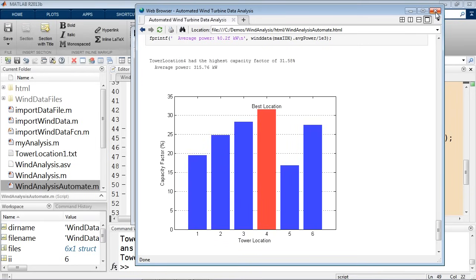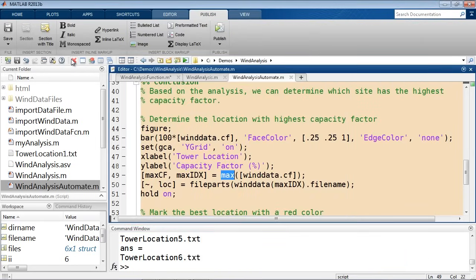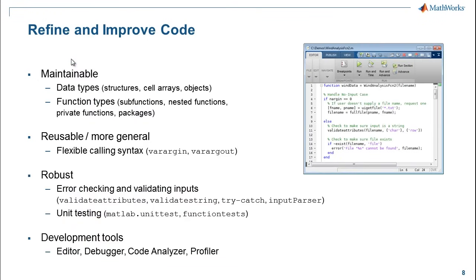This same script can apply if I come up with a hundred other data files — I just put them inside the wind data files folder, run it, and I'll have a brand new report with many more data files automatically analyzed. What we did in the second part was all about taking a working program and making it better — making it more maintainable by using better data types to store and organize information, using functions to make it more general so you can pass in file names, adding validations and error checking, and making it more user-friendly by providing an option to select files interactively through a dialogue box.